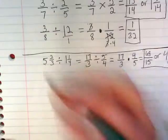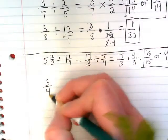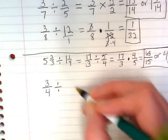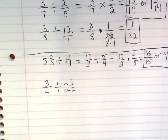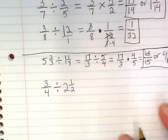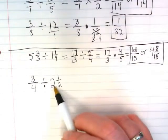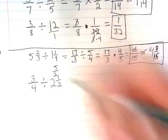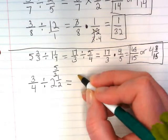Okay. You will also see problems where the first number is a fraction, and maybe only the second number is a mixed number. So we have to only convert the second one. 2 times 2 is 4, plus 1 is 5. So I'm going to write that just above it. And now I can do keep change flip.